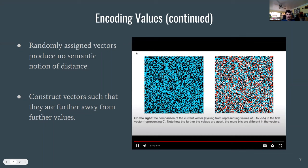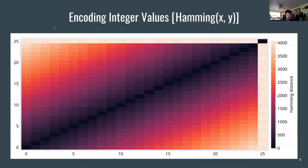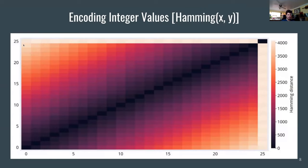A heat map shows the first 25 numbers and their pairwise distances, with a perfect distance of zero along the diagonal. As you go further from the diagonal, it decays toward what looks like a random vector. The last entry shows a truly random vector for comparison, demonstrating that even extreme values in the sequence are not quite random, though they are nearly as far apart as possible.